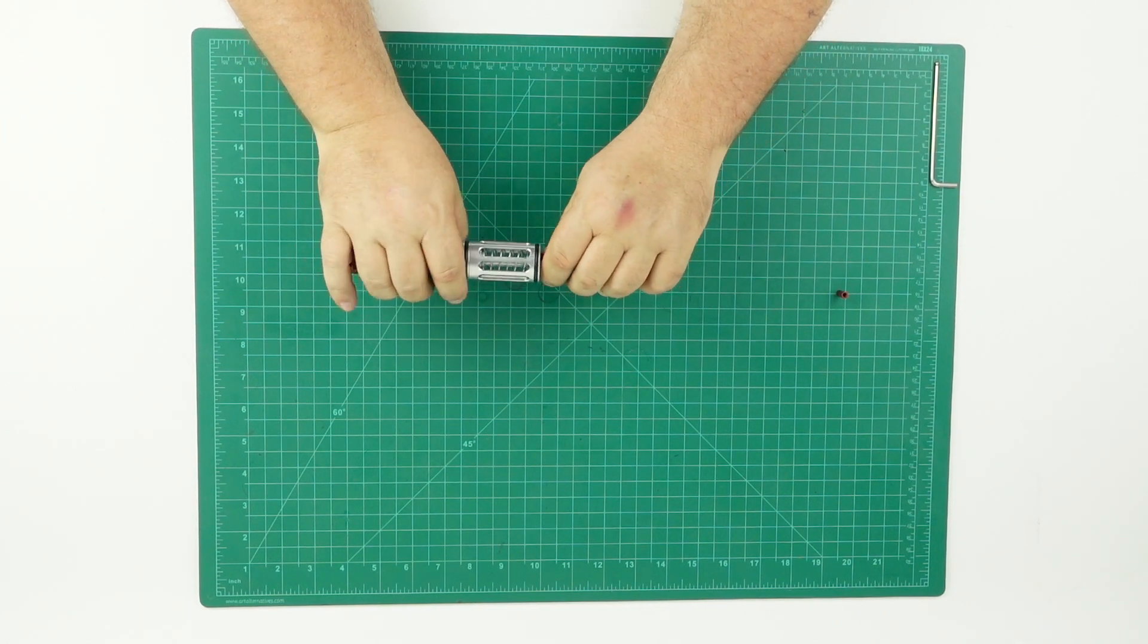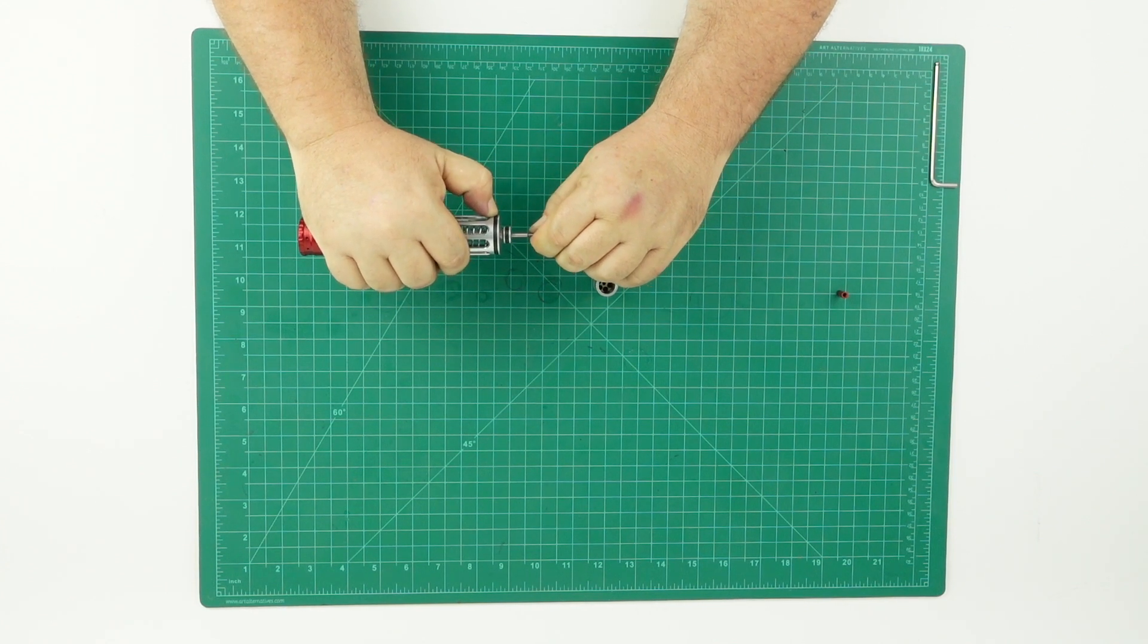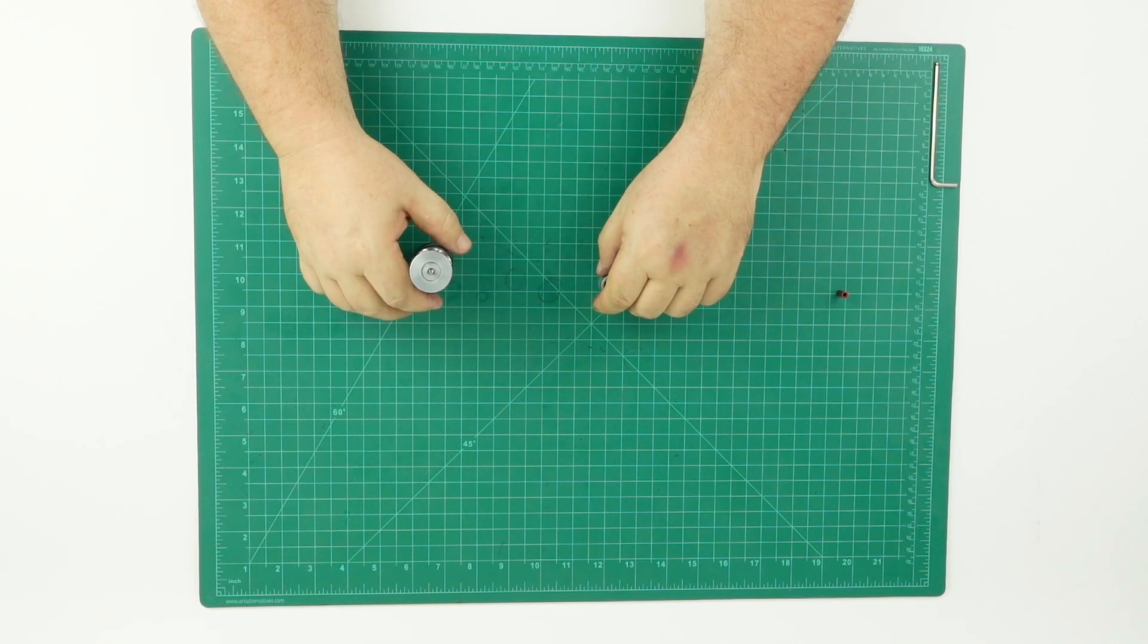If you ever over-pressurize the marker, this O-ring right here on the front of the multivalve will blow off. Put it back on as long as it's not cut.